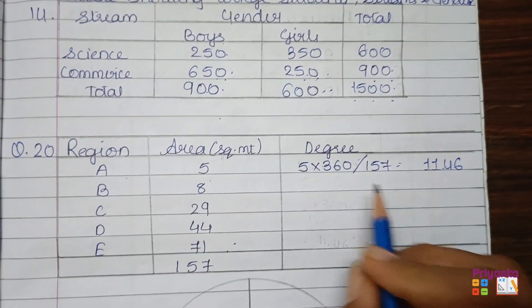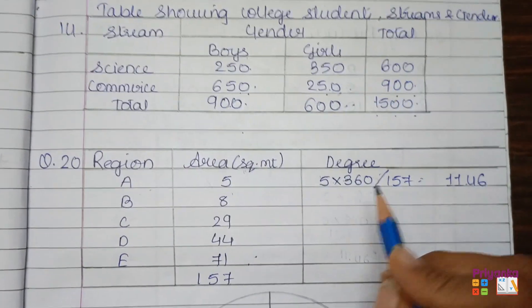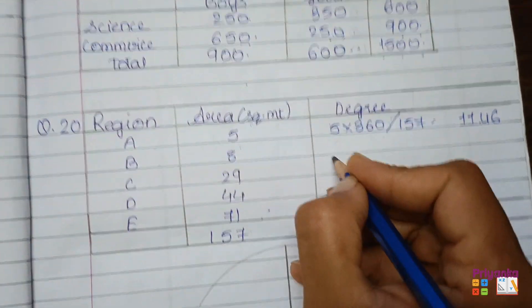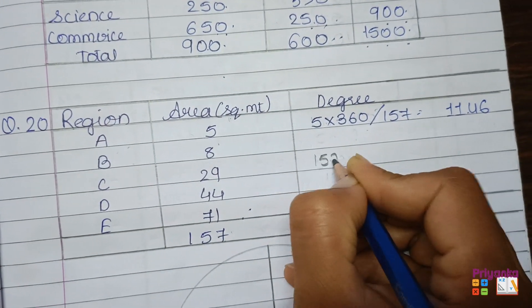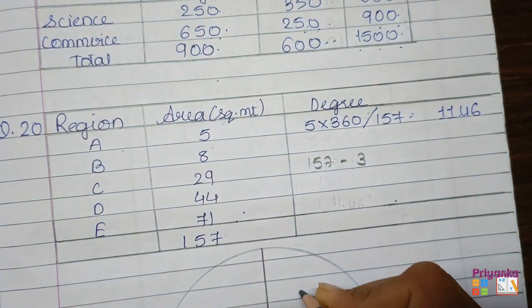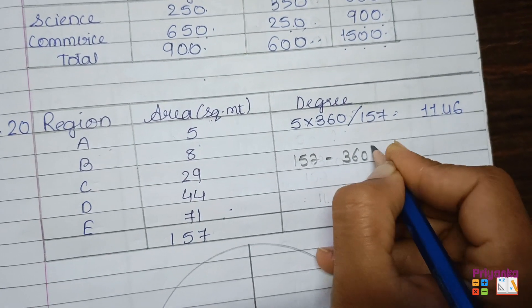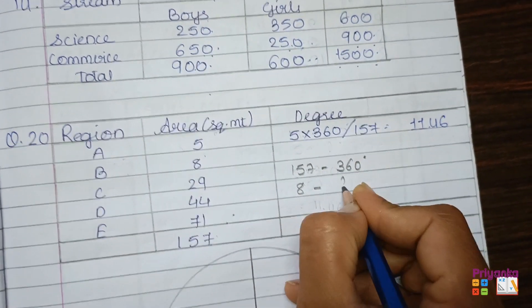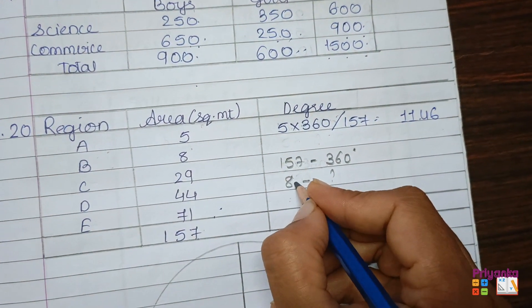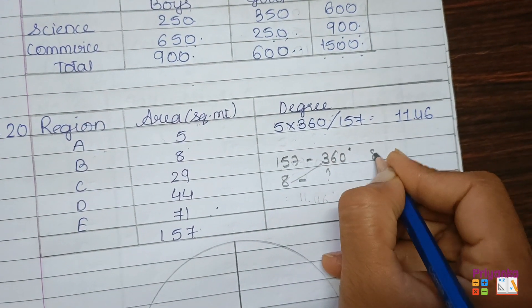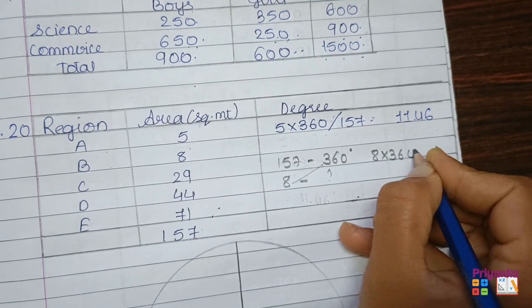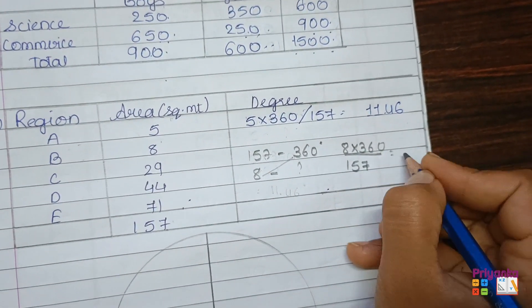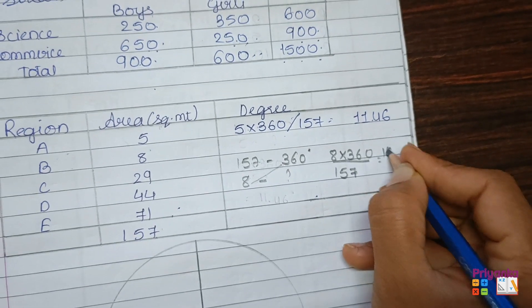For region B, the area is 8. Using cross multiplication: 8 multiplied by 360 divided by 157 gives approximately 18.34 degrees. This method — cross multiplication without memorizing a formula — makes it quick and easy to calculate the degree for each region.